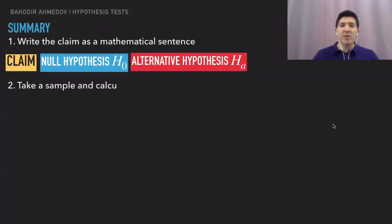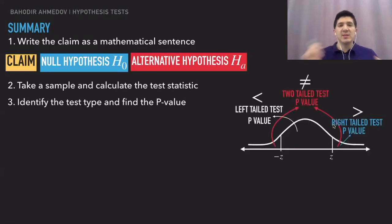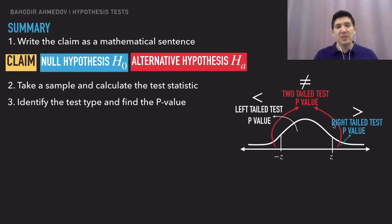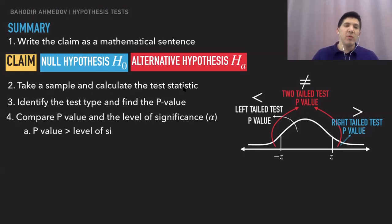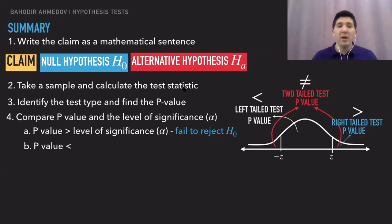If you're given a claim, we need to write this down mathematically — we need to state what is the null hypothesis and alternative hypothesis. Then we have to take a sample and calculate the test statistic. Then we have to identify the test type and find the p-values. We can skip step three using so-called rejection regions — we can just calculate the test statistic and place it onto the rejection region or not. In step four we decide whether the test statistic is in the rejection region, or whether the p-value is greater than the level of significance, and based on that we make a conclusion.